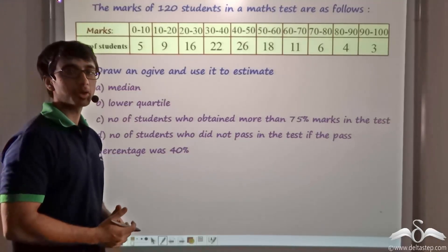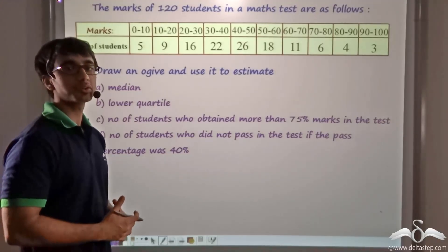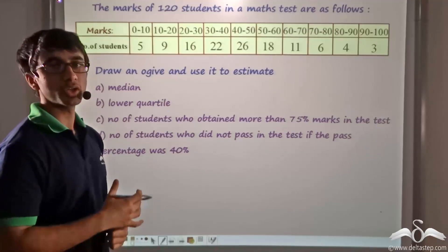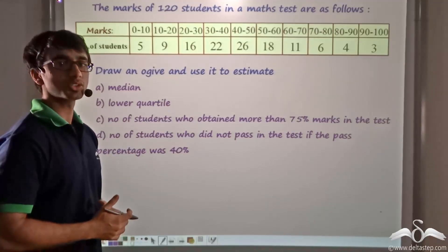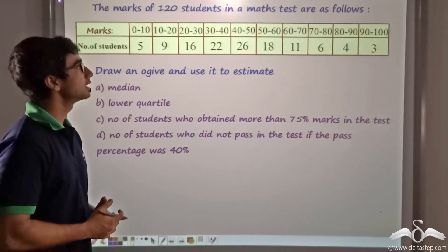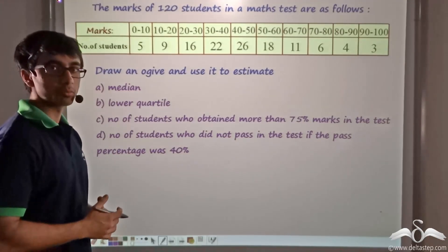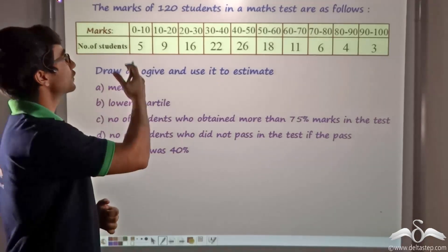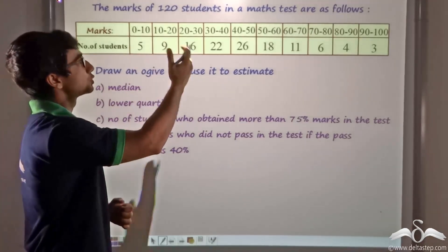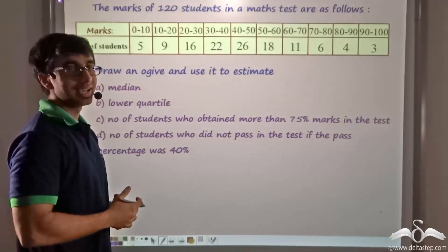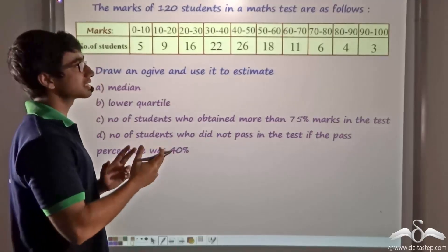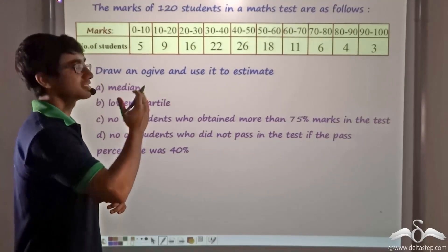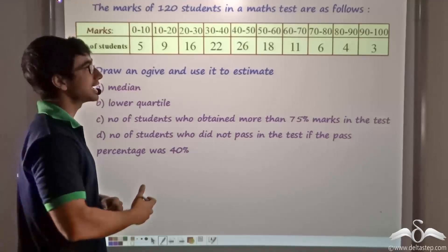We have studied how to find the median and quartile with the help of an ogive. Now let us solve a simple problem. The following information has been given to us: the marks of 120 students in a maths test, provided in the form of a continuous class distribution.